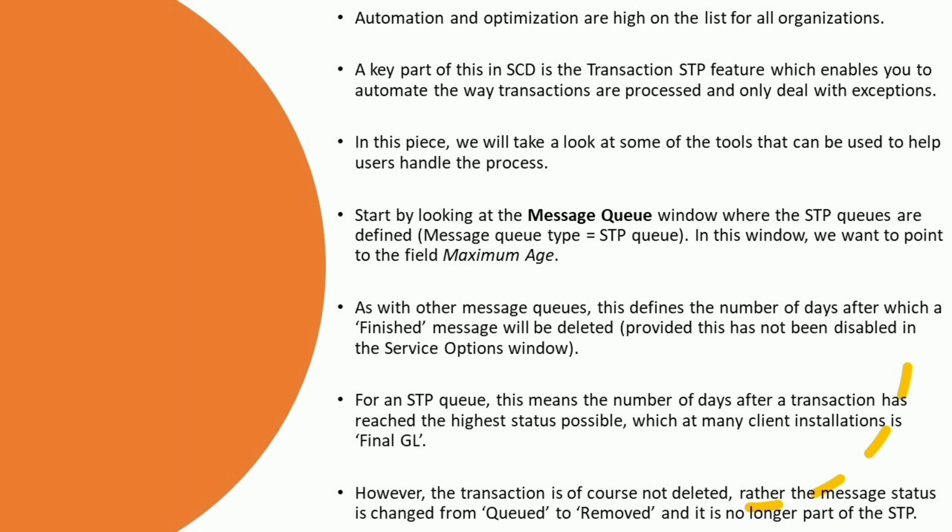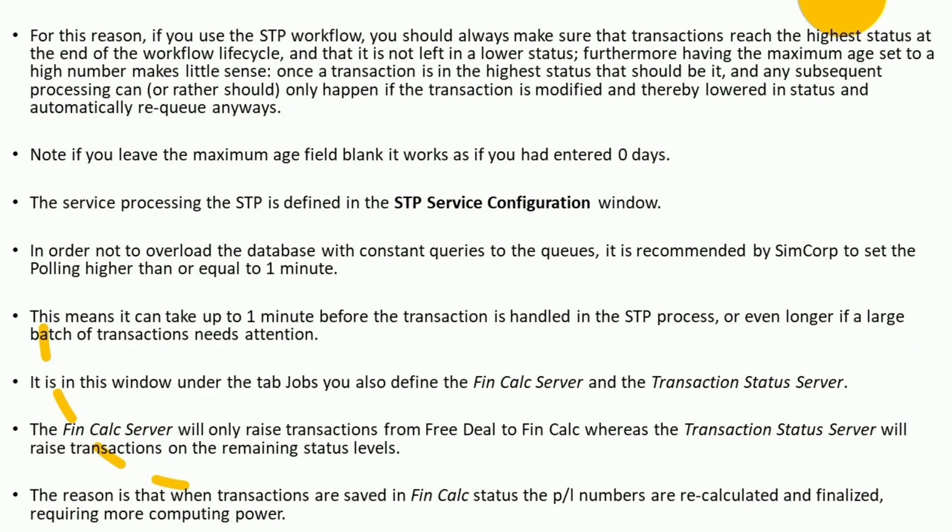For an STP queue, this means the number of days after a transaction has reached the highest status possible, which at many client installations is Final GL. However, the transaction is not deleted — rather the message status is changed from queued to removed and it is no longer part of the STP. For this reason, if you use the STP workflow you should always make sure that transactions reach the highest status at the end of the workflow life cycle.